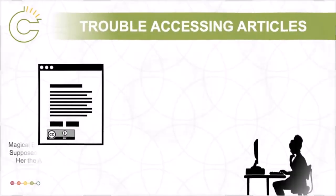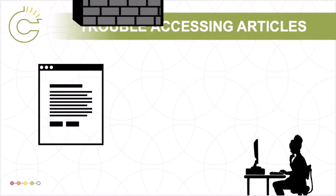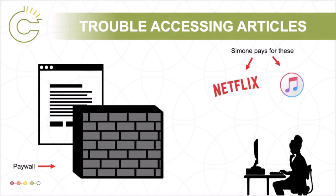If the article assigned by the instructor was an open access article, there's a good chance that Simone would have been able to read it from home without much effort. However, the majority of all academic literature is not freely available online. Simone is likely trying to access an article that is behind a paywall. She might also encounter content behind a paywall when paying for music on iTunes or subscribing to Netflix to watch TV and movies.